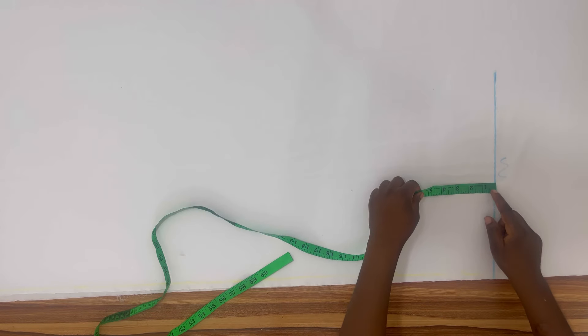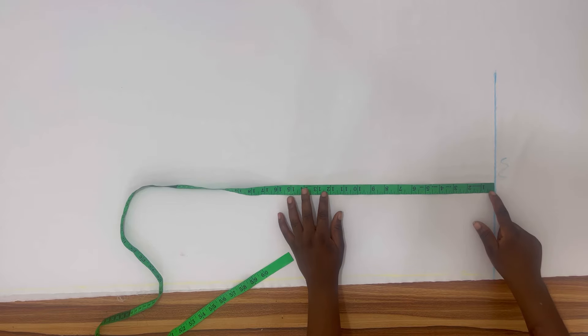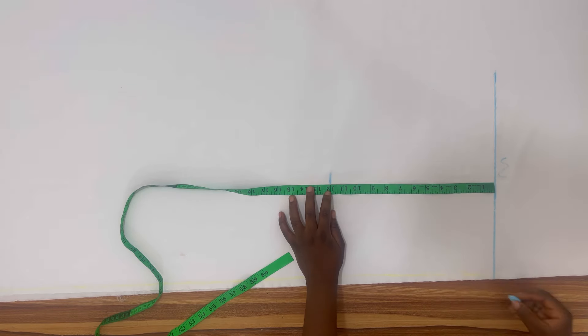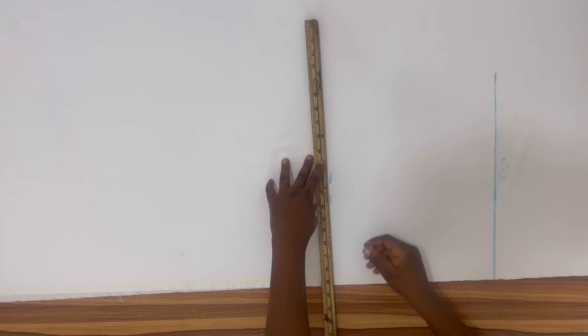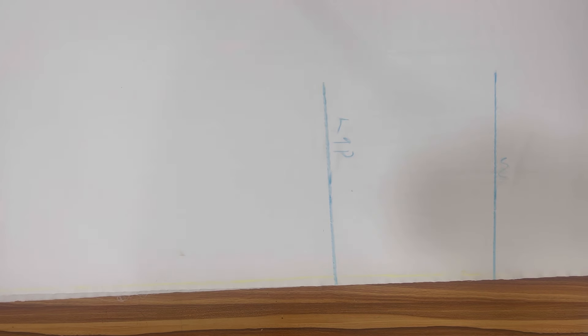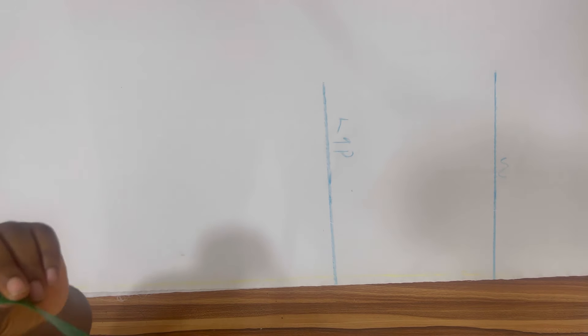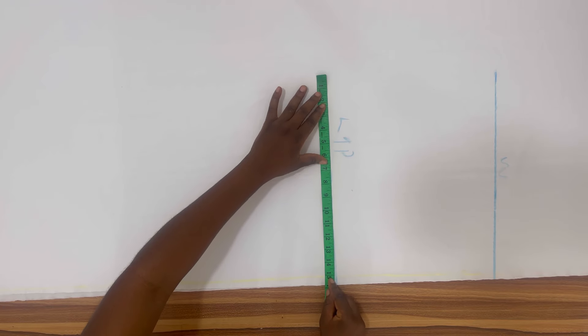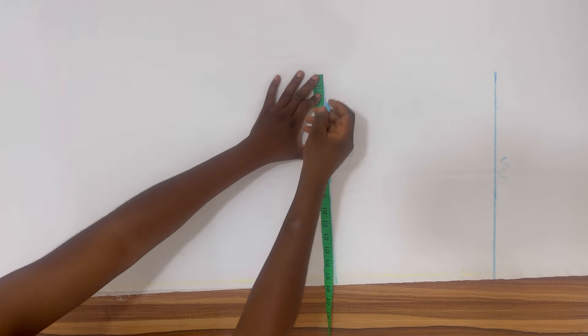I'm going to use the exact measurement — that is my full length minus my half length — to do these trouser parts. The top is my waistline and what I just marked out is the lap measurement, which is also the crotch length. The distance from the waist to the lap is 13 inches. If you're a size medium or large, use 13 inches; if you're more than large, use 14 inches. At the lap line I'm going to input my lap measurement plus 4 inches.